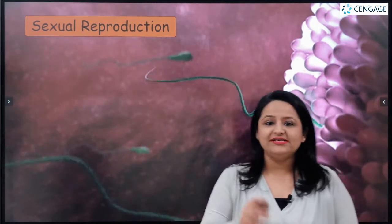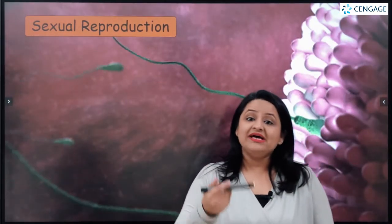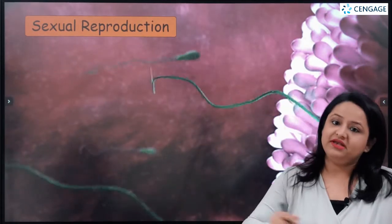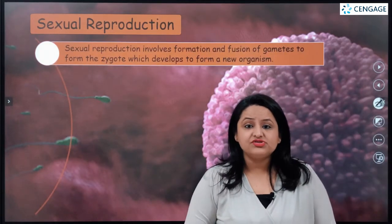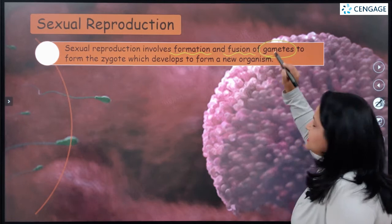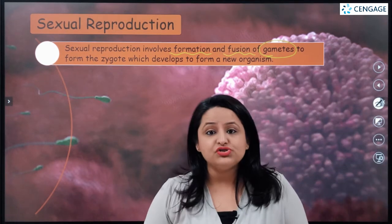Sexual reproduction involves the fusion of two special cells which are known as gametes. As you can see in the slide behind me, there are two special cells — a motile cell known as the male gamete, and a non-motile cell known as the female gamete. These two gametes fuse together to form a single cell known as the zygote. Sexual reproduction foremost involves the formation and fusion of special cells of the body known as sex cells or gametes.